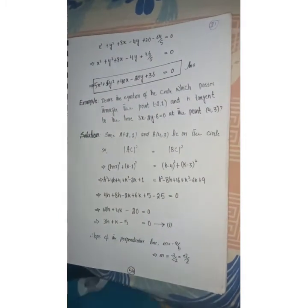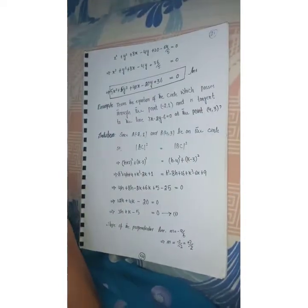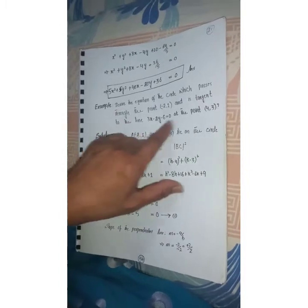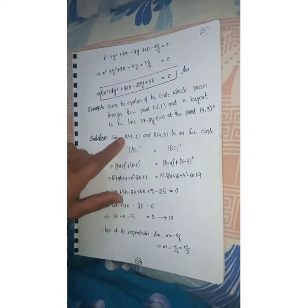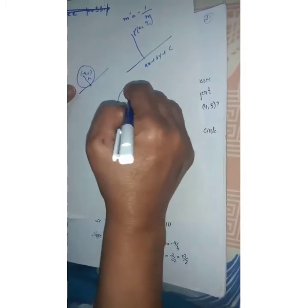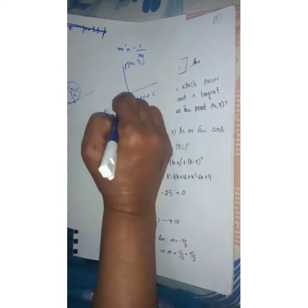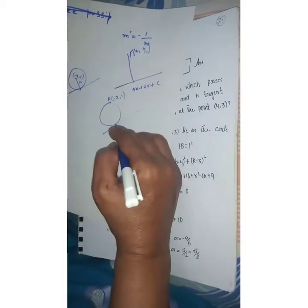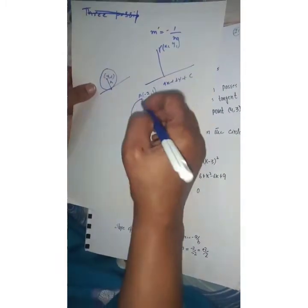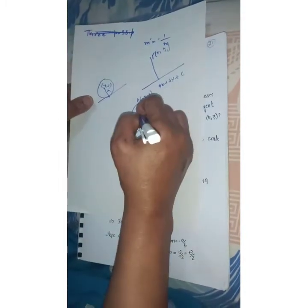Now let us do another problem: derive the equation of the circle which passes through the point (-2, 1) and is tangent to the line at the point (4, 3). So we have point A = (-2, 1) which lies on the circle, and point B = (4, 3) which is where the line is tangent to the circle. Both points lie on the circle, so both are at distance r from the center.